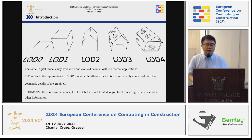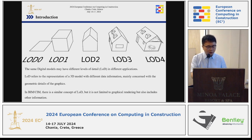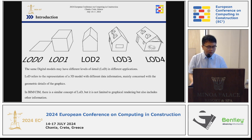Multiscale Digital Modeling is an important concept in building information modeling and city information modeling. As we can see from the picture, the same digital models may have different levels of detail in different applications. LOD refers to the representation of a 3D model with different data information, mainly concerned with geometric details, but sometimes we also concentrate on semantic information. In both building and city information modeling, there is a similar concept of LOD, but it's not limited to graphical reading — it also includes other information.